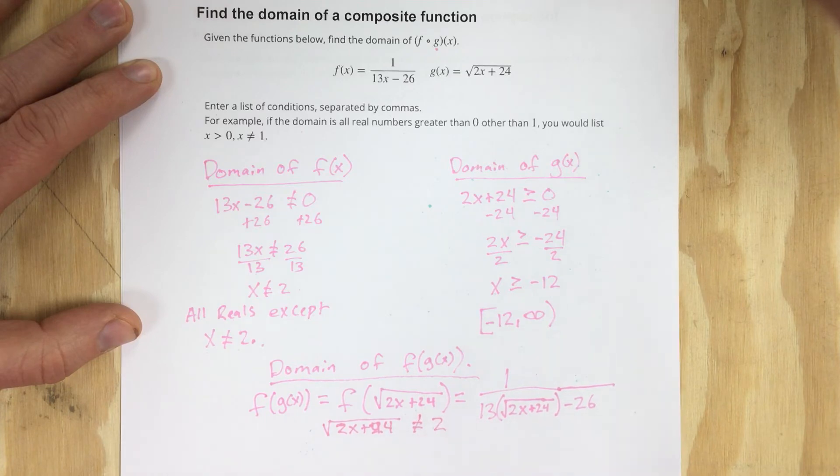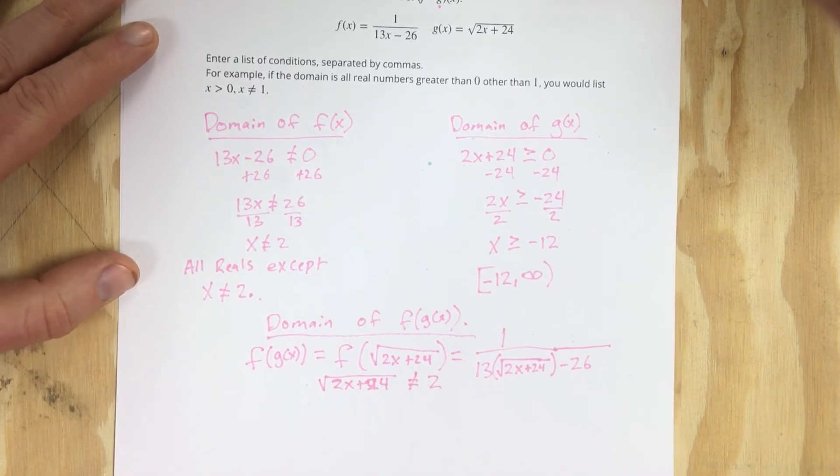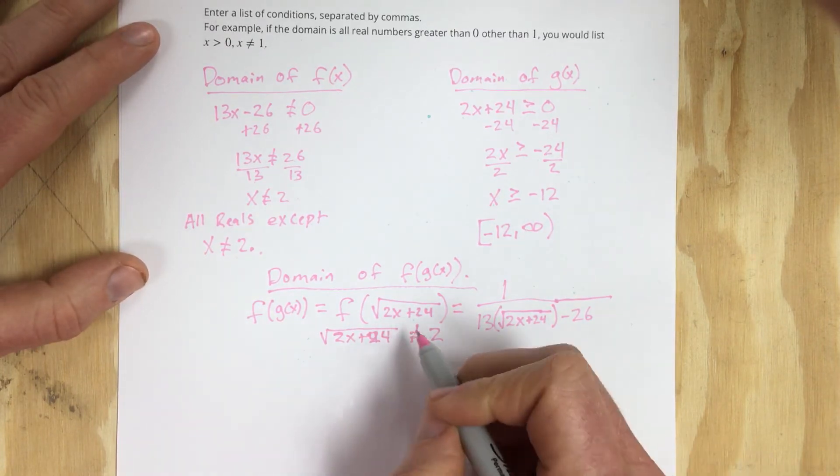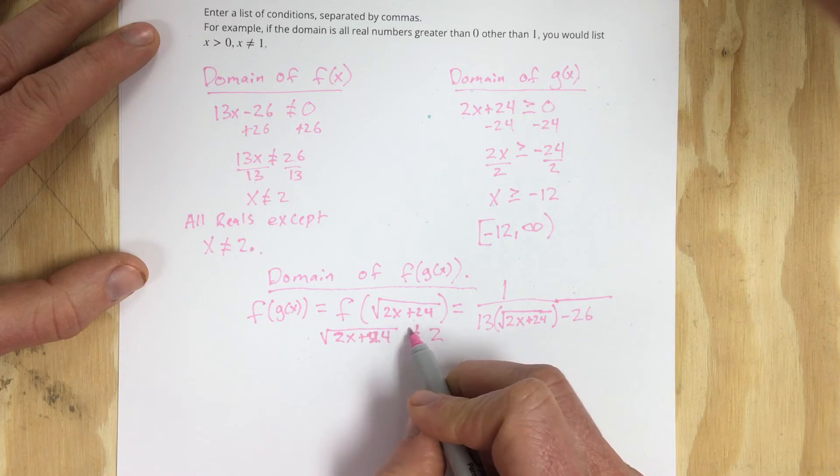So we'll slide up just a little bit. What I'm going to do to figure this out is I'm going to square each side. So if I square each side, that would give me 2x plus 24 cannot equal 4.